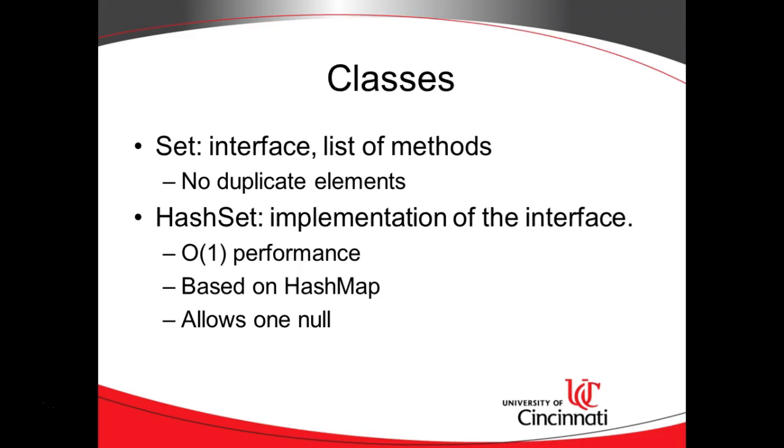Iterating over the collection is going to be dependent on the size of the collection, but adds and removes are very efficient. Now, a hash map will allow one null value. Therefore, a hash set will also allow one null value.